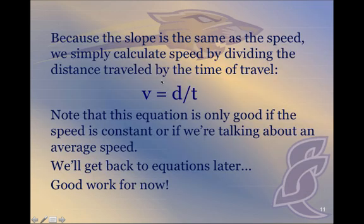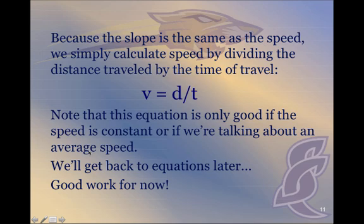From all of this we derive our first formula: for constant or average speed, speed equals distance divided by time, because that was our recurring slope. We'll look at this equation more formally in the future, but right now we wanted to make sure you understood how it's tied to our distance versus time plot. Distance over time equals speed. Great job, and we look forward to moving on.